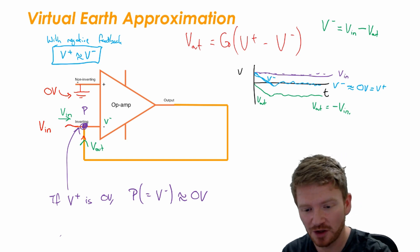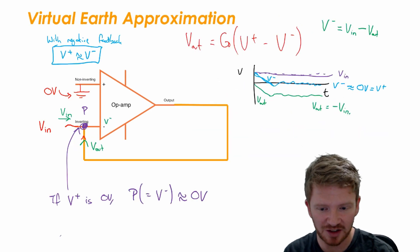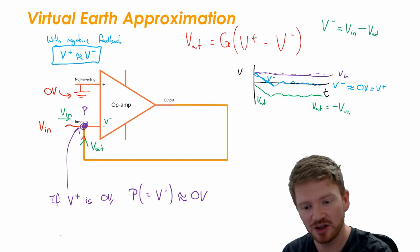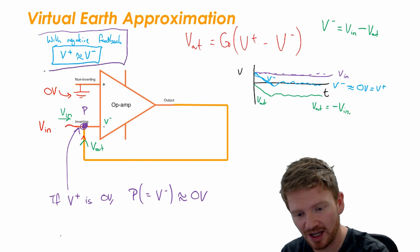If the non-inverting input is connected to zero volts it comes down again to this clear point that if there's negative feedback the op-amp will do whatever it has to do to make these two inputs equal each other. And if these two inputs are going to equal each other, if one of them is zero, the op-amp will kick out whatever output is necessary here to make it zero here.